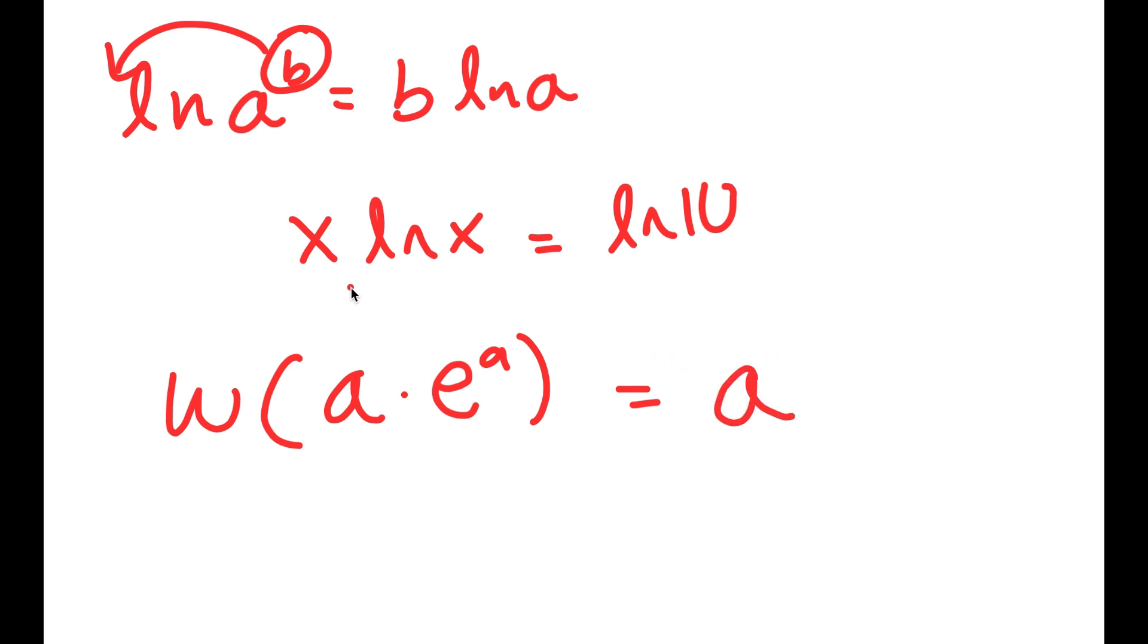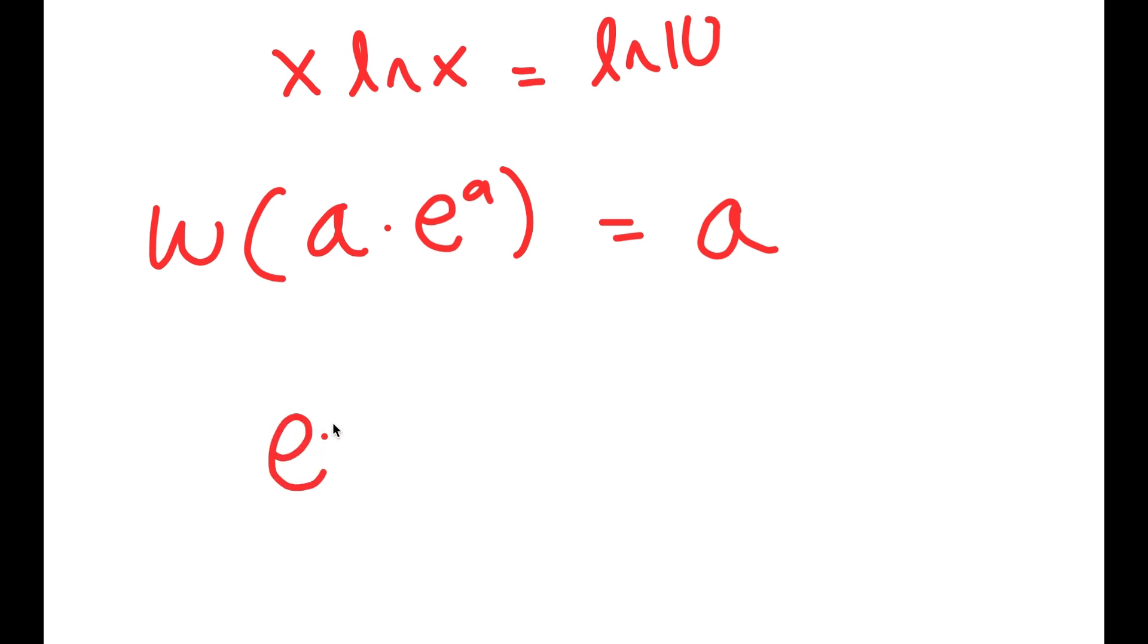So in this case, we have x times ln x is equal to ln 10. And I'm actually going to rewrite x as e to the power of ln x. And e to the power of ln x is the same thing as x because the e and ln cancel out. So now I have e to the power of ln x times ln x is equal to ln 10.